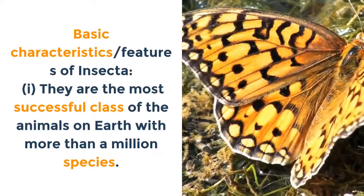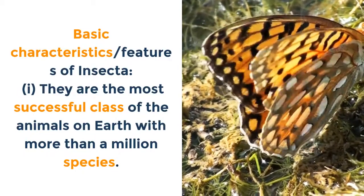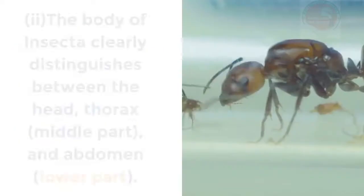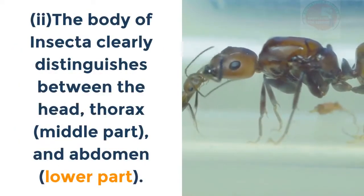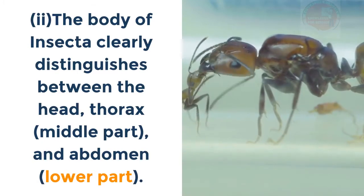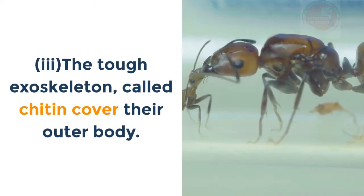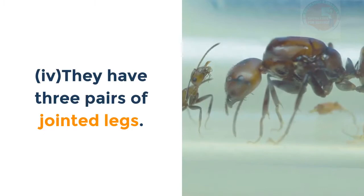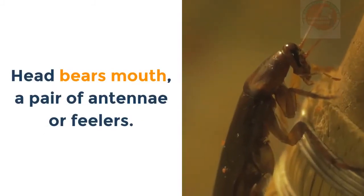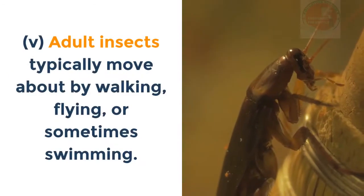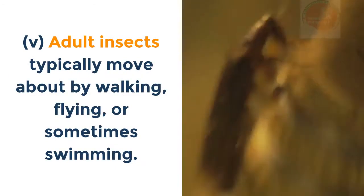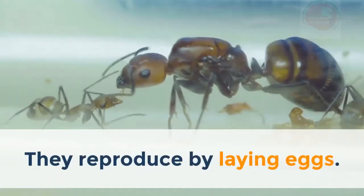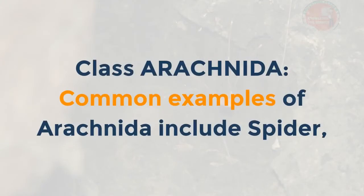Class Insecta: common examples include housefly, butterfly, ants, mosquito, grasshopper, aphid, termite, etc. Basic characteristics: i. They are the most successful class of animals on earth with more than a million species. ii. The body clearly distinguishes between head, thorax (middle) and abdomen (lower). iii. A tough exoskeleton called chitin covers their outer body. iv. They have three pairs of jointed legs. v. The head bears a mouth and a pair of antennae. vi. Sexes are separate; they reproduce by laying eggs.